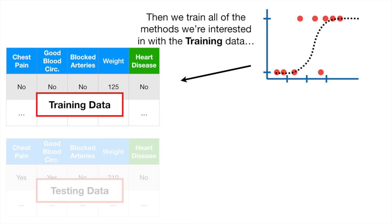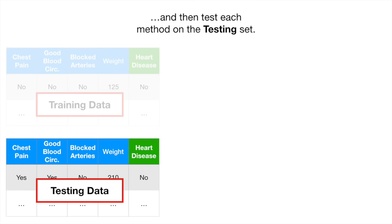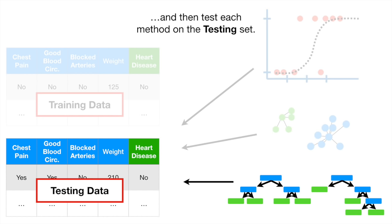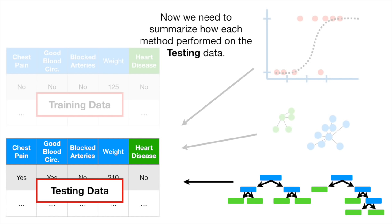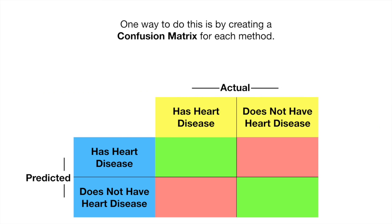Then we train all of the methods we're interested in with the training data, and then test each method on the testing set. Now we need to summarize how each method performed on the testing data. One way to do this is by creating a confusion matrix for each method.